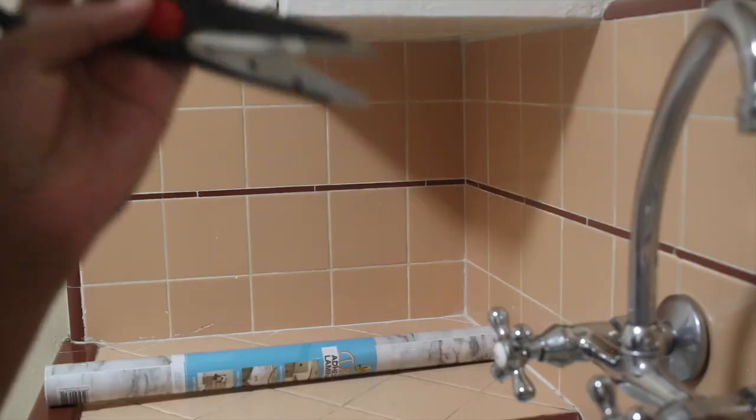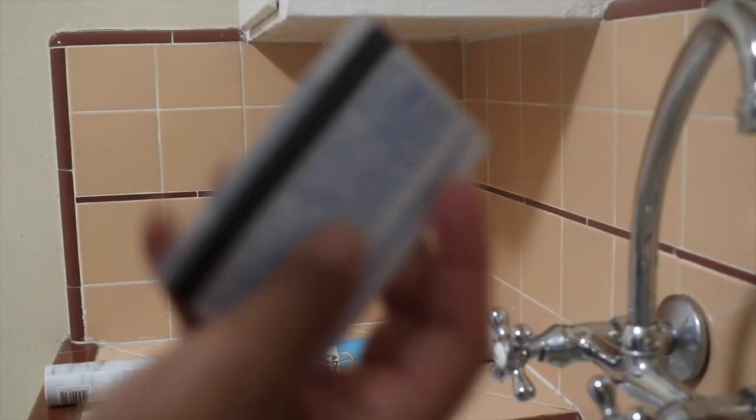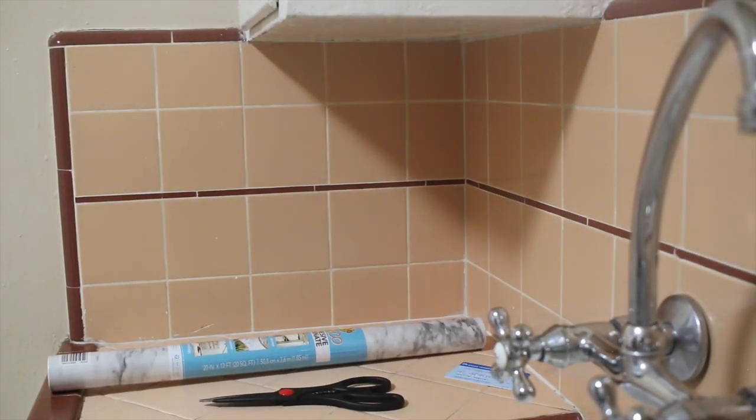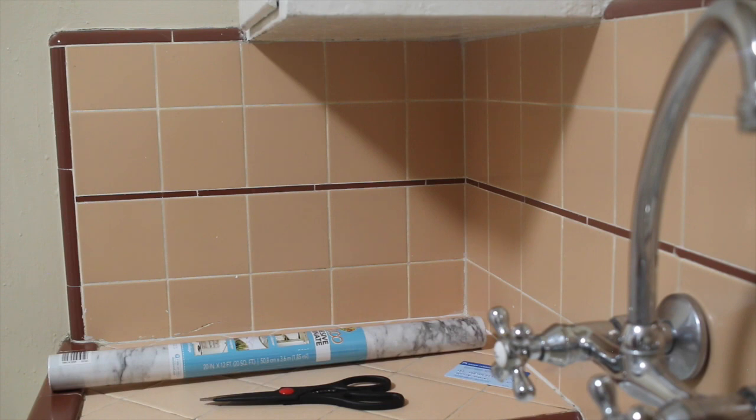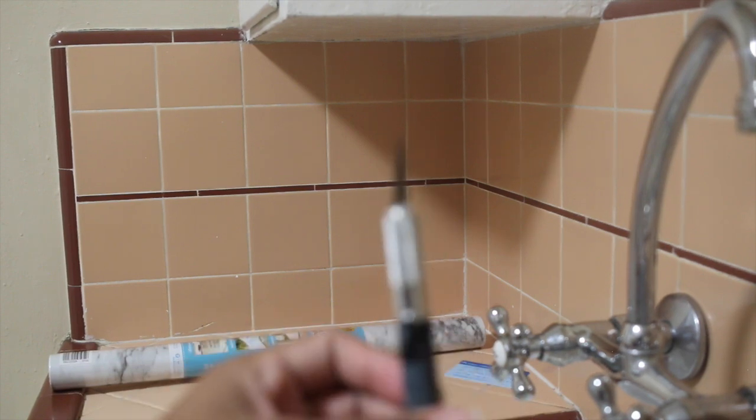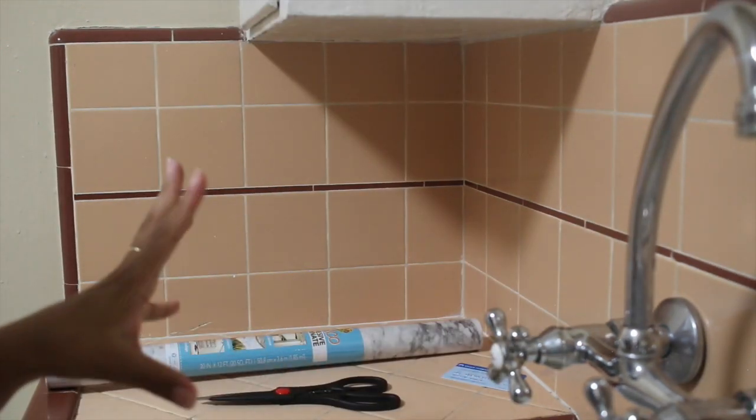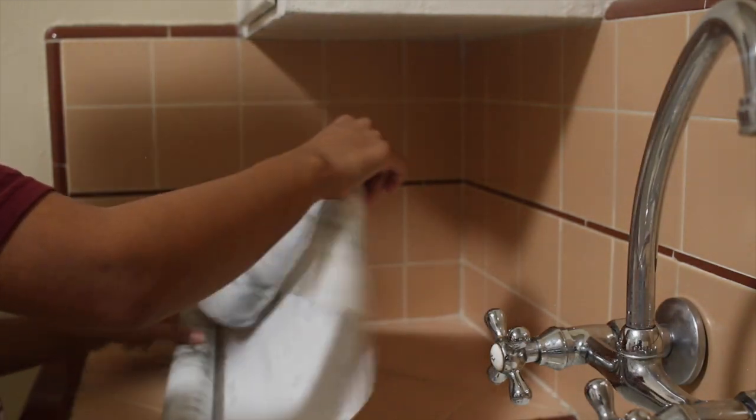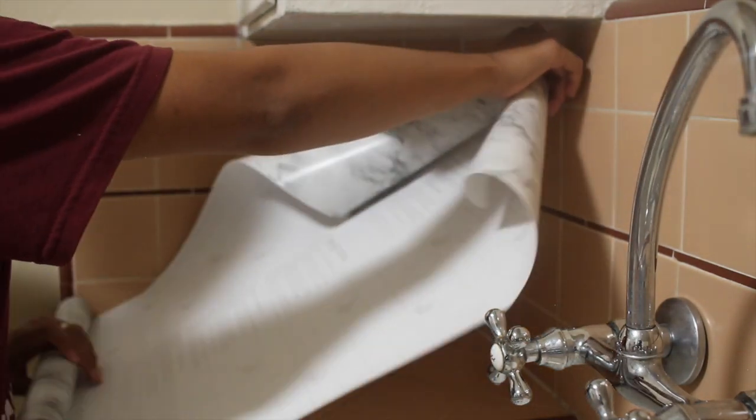So you're going to need the contact paper, you're going to need some good scissors, a card to take out all the air bubbles, and then the X-Acto knife. I had a brand new one, but my old one will have to do, a little rusty. I'm going to start with this side. They all come with lines in the back so you can measure out, cut it out when you need it.